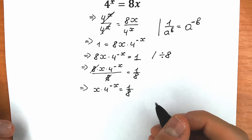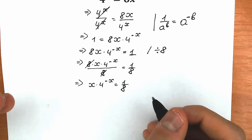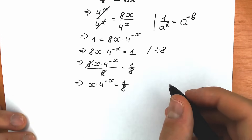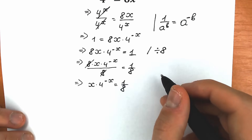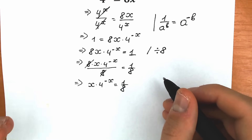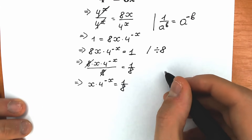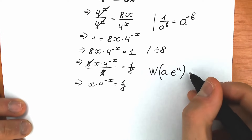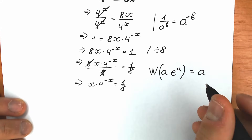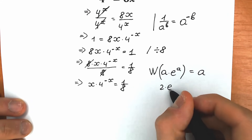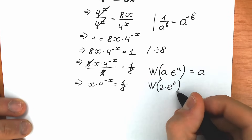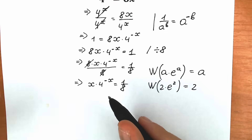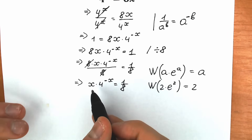Right now, there's one really great way to solve this question — applying the Lambert W function. I have a lot of videos on my channel about this, but I'll explain it once more. When we have the expression a times e to the power a, applying the Lambert W function gives us a. For example, Lambert W of 2 times e to the power 2 equals 2, because a equals 2.